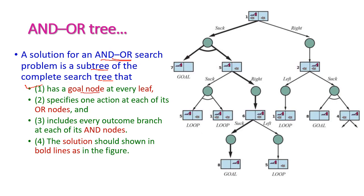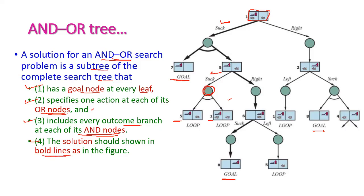The solution subtree has three properties: first, there is a goal node at every leaf — in every branch we get a leaf node which is the goal node. Second, it specifies one action at each of its OR nodes — we select one action to reach the goal. Third, it includes every outcome branch at each of its AND nodes. The expected belief state for this search may be either state 5 or state 1, and the solution is shown in bold lines as seen in the figure.